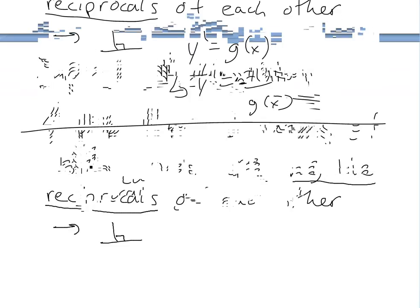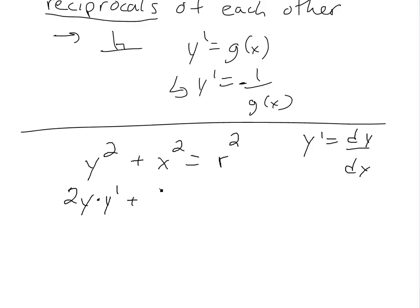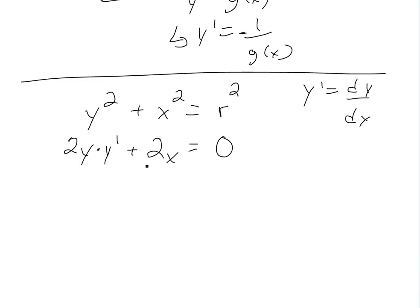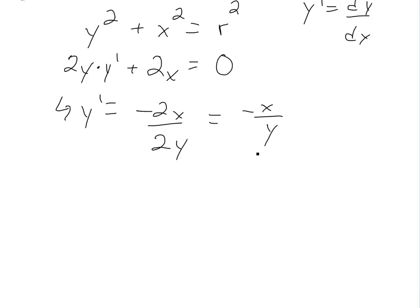So let's differentiate the two equations. For y² + x² = r², using the chain rule: we get 2y times y prime plus 2x equals 0, since the derivative of r² is zero (r is a constant). Rearranging, y prime equals negative 2x over 2y, so y prime equals negative x over y.